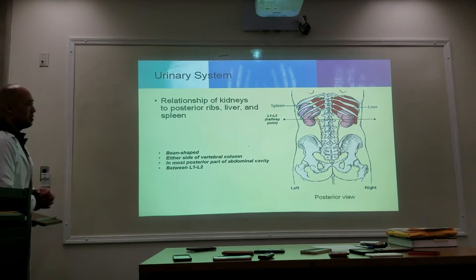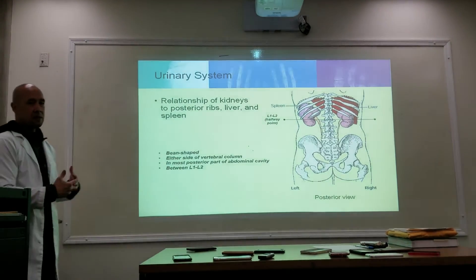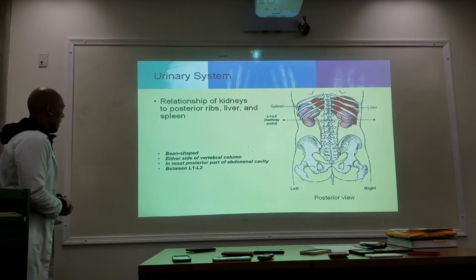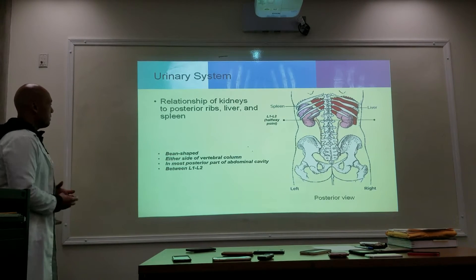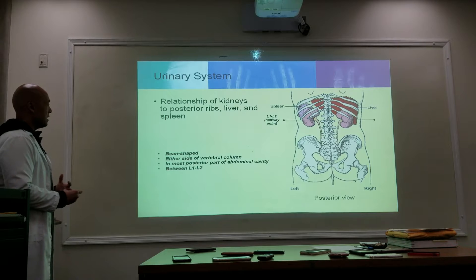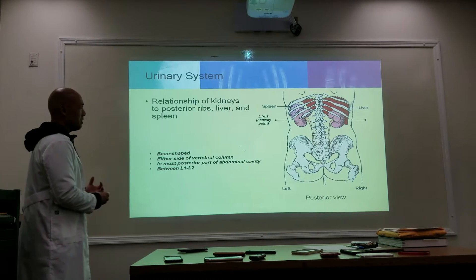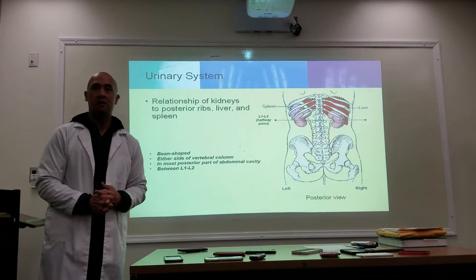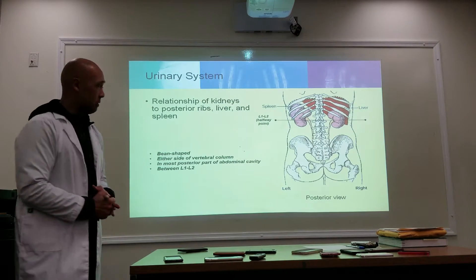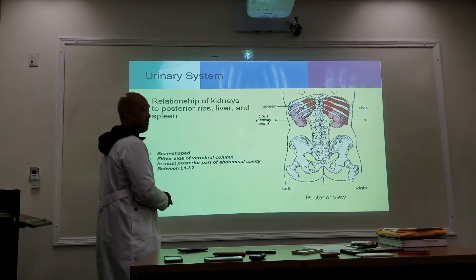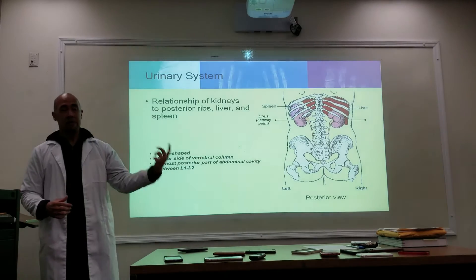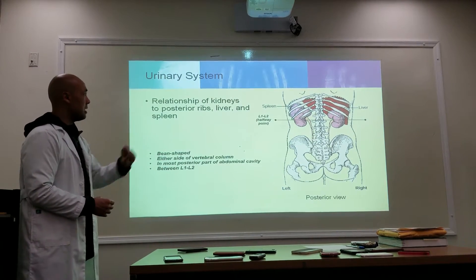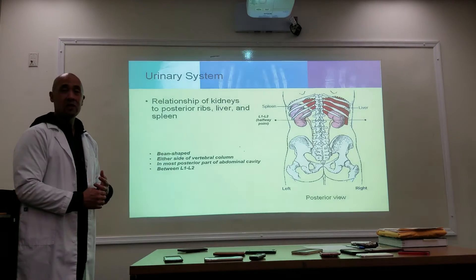Knowing where the kidneys are located is half the battle in performing urinary procedures. The kidney is bean-shaped. It's on either side of the vertebral column — one left, one right. The right kidney is going to be lower because of the liver, which also means the ureter is going to be shorter.